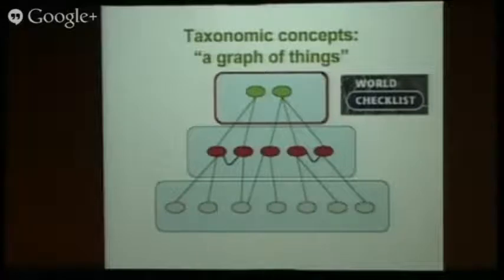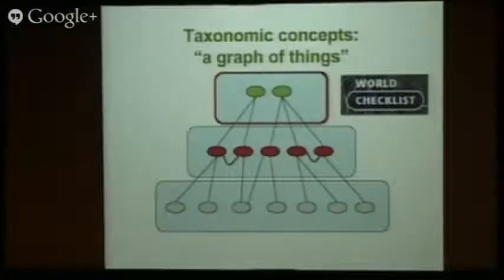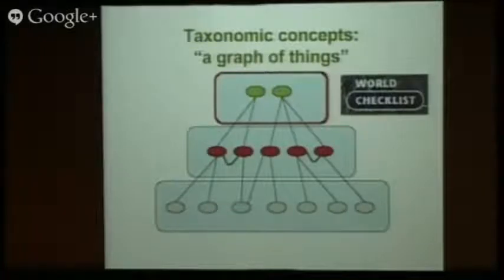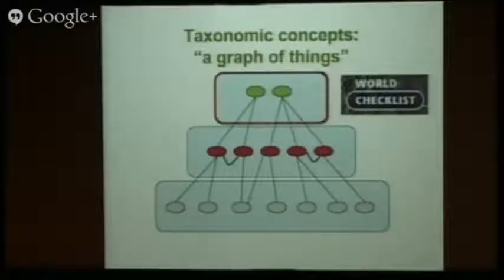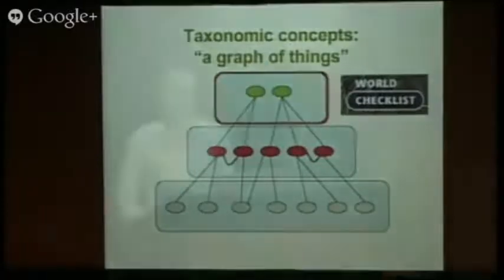We talked a lot today about the kinds of questions that we're asked as biodiversity scientists. The questions that people ask us tend to be at this level — you want to recognize species and then talk about how species interrelate or where species are found. So we want to operate at the level of a graph of things. Being a self-confessed geek, I think a graph of things sounds really cool. But the problem is most of the data that we have is really at the bottom layer — it's at the level of strings.